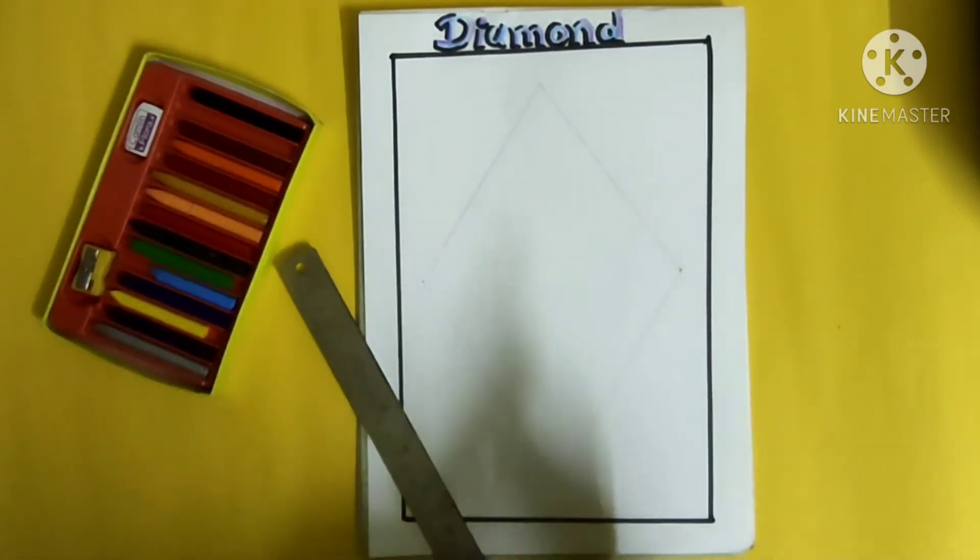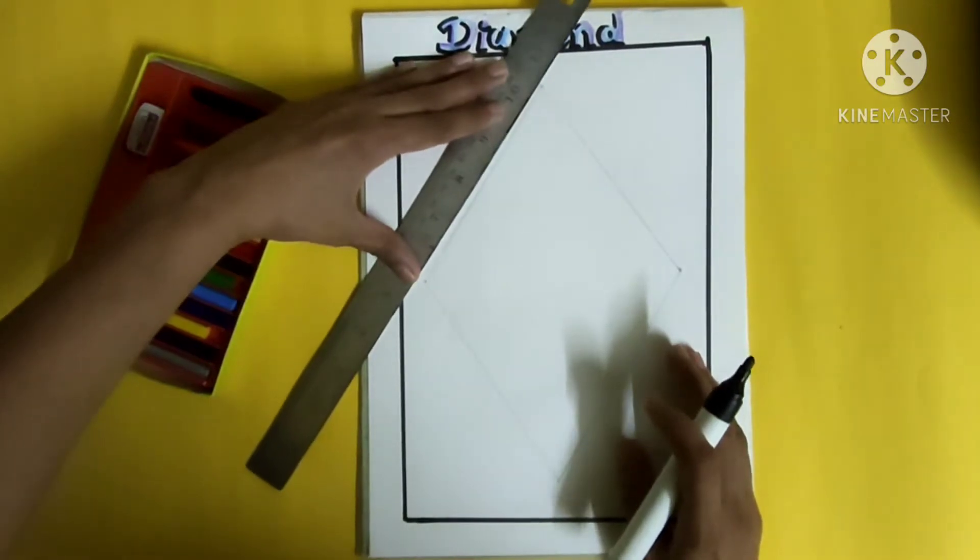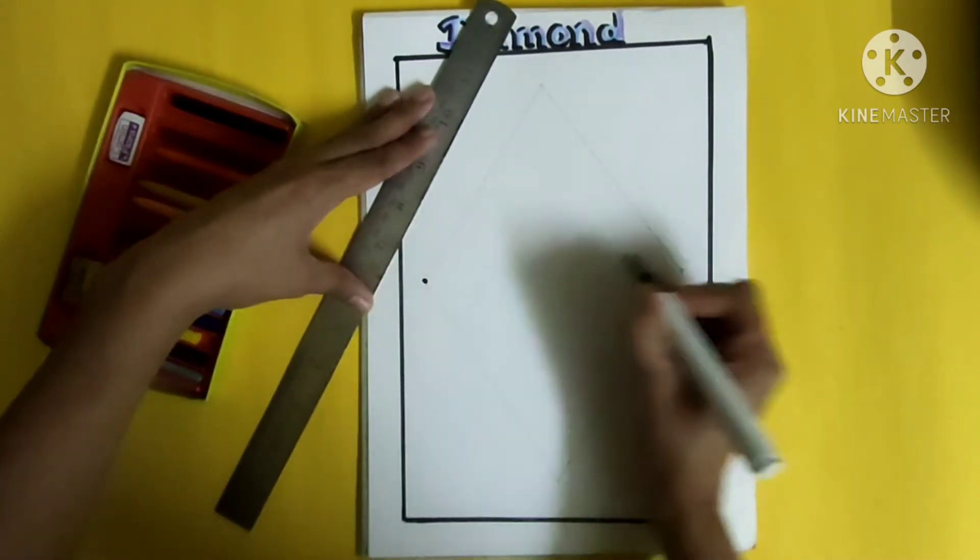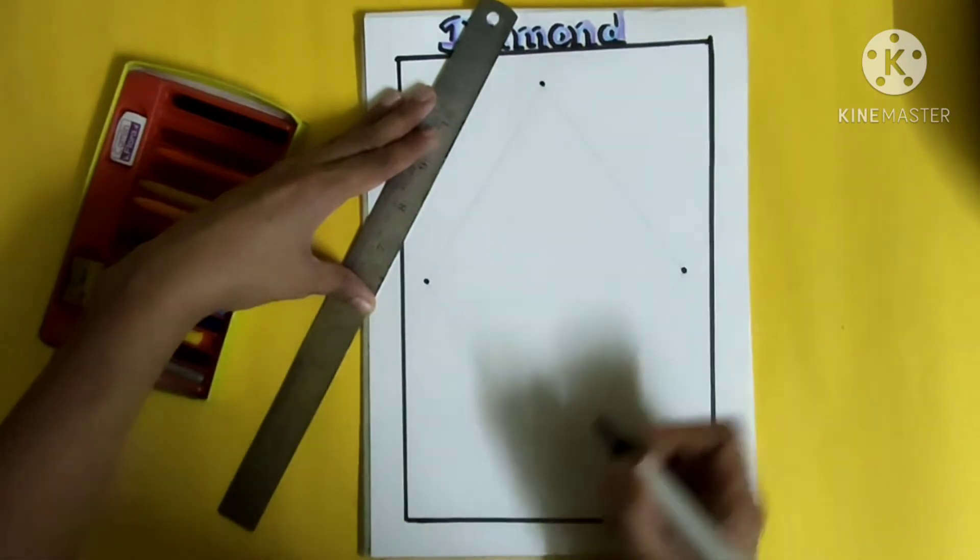See, it looks like two triangles joined to each other. So now I will show you again.